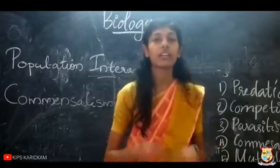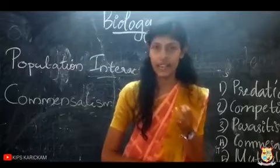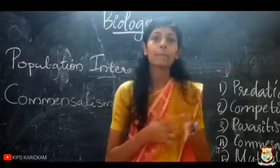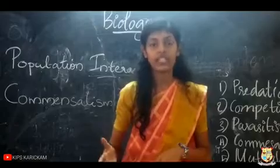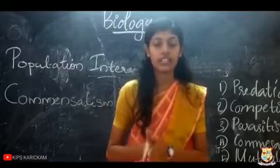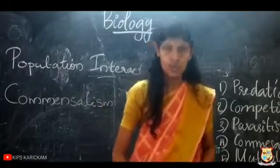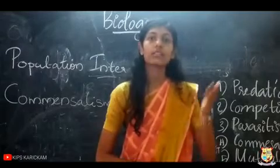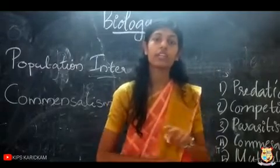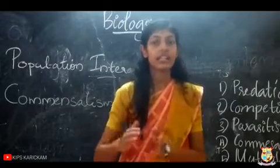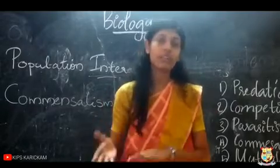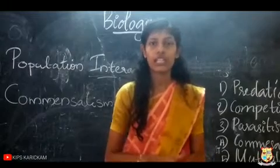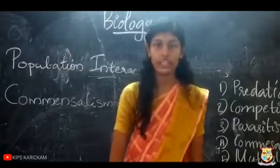One more example is the interaction between fungus and algae. The algae prepare food, while the fungus gives shelter for the algae. So today we learned about Commensalism and Mutualism. Commensalism is the interaction between two organisms in which one is benefited and the other is neither benefited nor harmed. Mutualism is the interaction in which both organisms are equally benefited. Thank you.